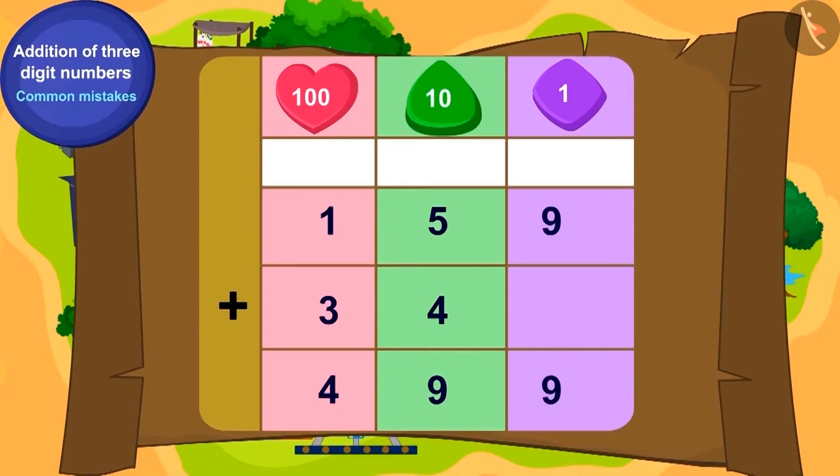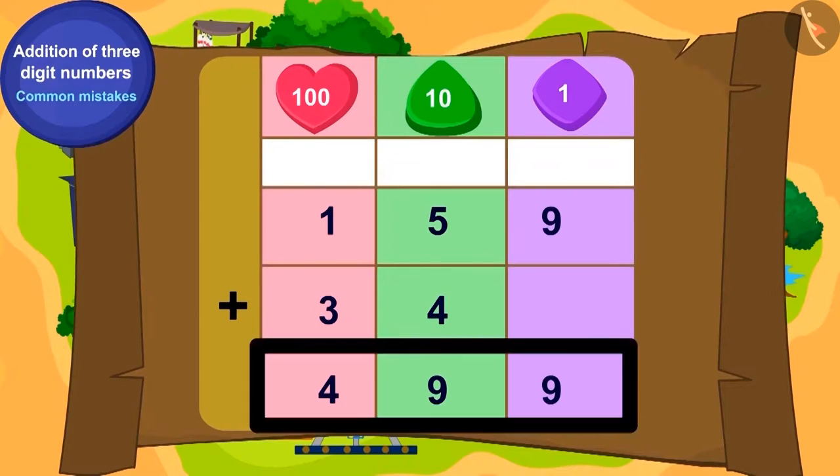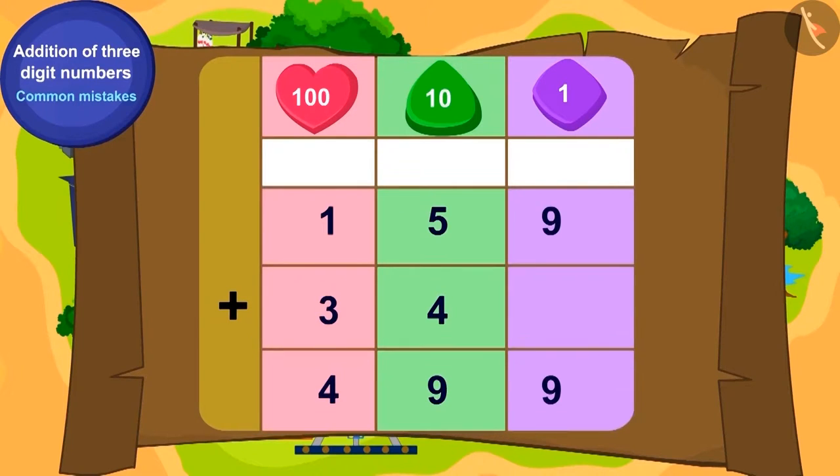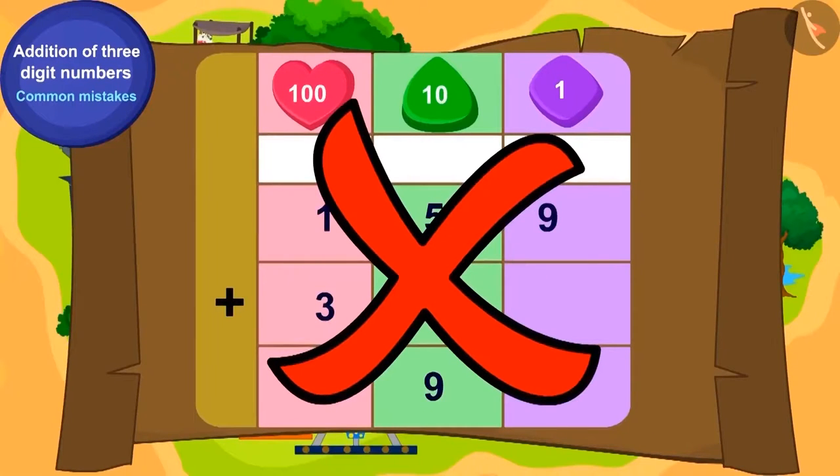Bablu starts solving the puzzle. To get the total sum of chocolates, 159 and 34 is written like this. Is this addition correct? No? Can you correct the mistake and write the sum correctly?